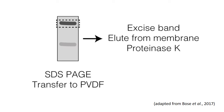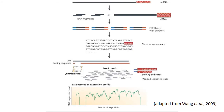The band corresponding to your protein of interest can then be cut out. Your protein and any interacting RNA are then separated and treated with proteinase K to get rid of any protein. You now have only the RNA that the protein interacted with. Now that you have isolated the RNA, you can sequence it and determine what RNAs are bound by your protein of interest.